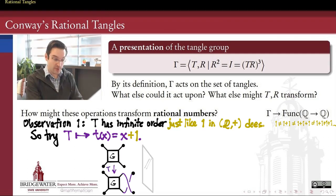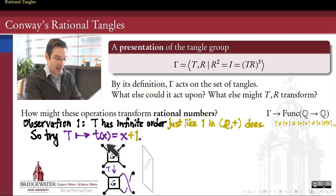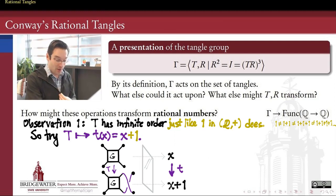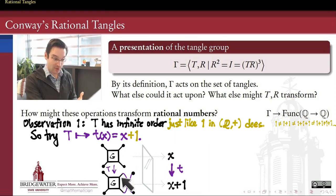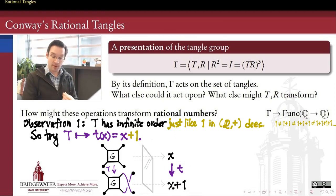What we're doing when we create a representation: in tangle world, adding another twist gives an operation on tangles. Passing through the looking glass to rational numbers, adding one more twist to a tangle will add the number 1 to the rational number used to represent that tangle. A representation sets up this looking glass where operations on tangles correspond to operations on rational numbers. So we associate capital T to the function on the rationals which adds one.